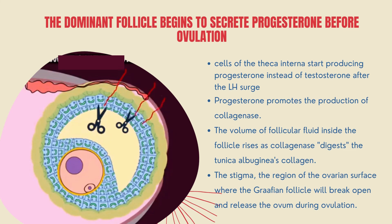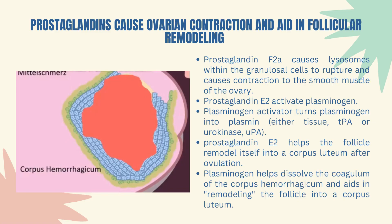Before ovulation, the dominant follicle starts to secrete progesterone. The cells of the theca interna start producing progesterone instead of testosterone after the LH surge. This localized increase in progesterone is necessary for ovulation because progesterone promotes the theca interna cells' production of the enzyme collagenase. Prostaglandin E2 is thought to direct the restructuring of the follicle by activating a substrate known as plasminogen. Plasminogen activators turn plasminogen into plasmin, the active enzyme involved in tissue remodeling. Plasminogen assists in remodeling the follicle into a corpus luteum by assisting in dissolution of the corpus hemorrhagicum coagulum.